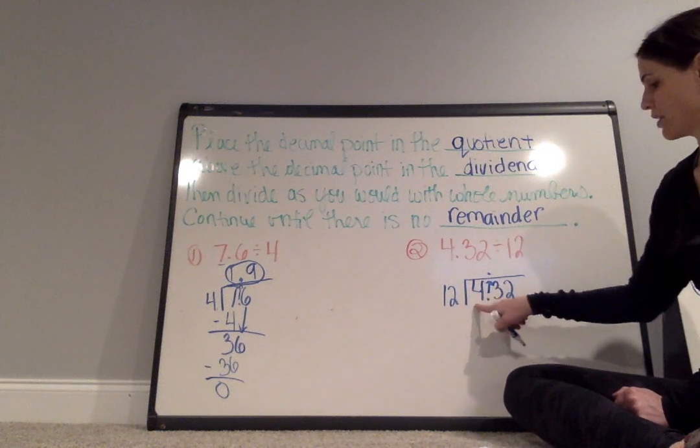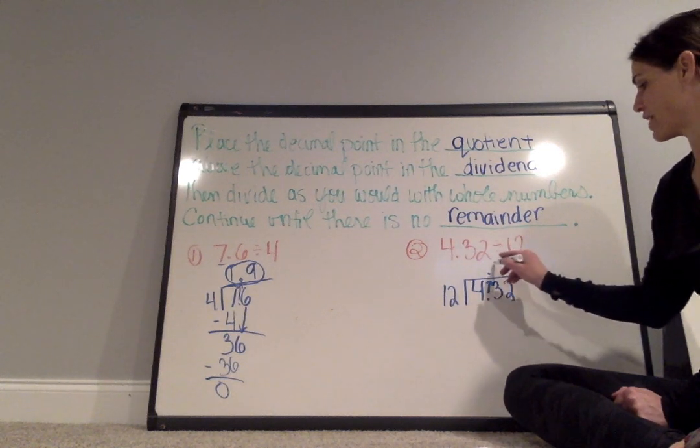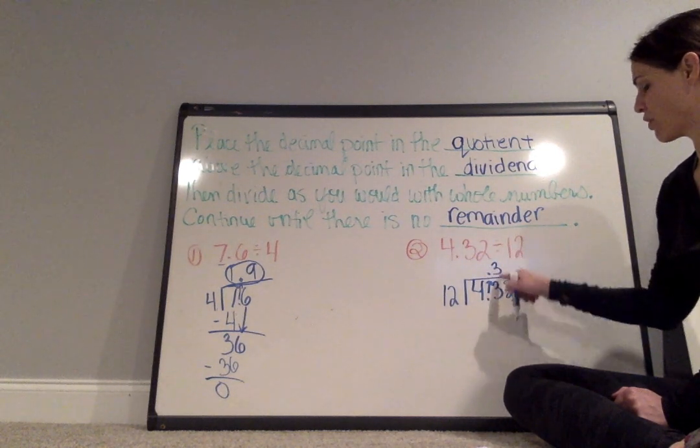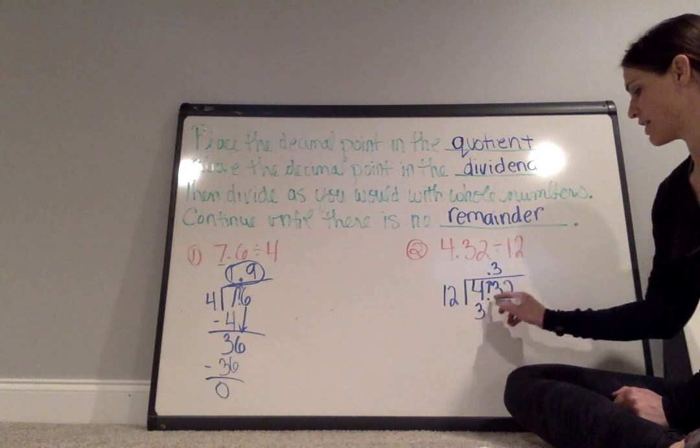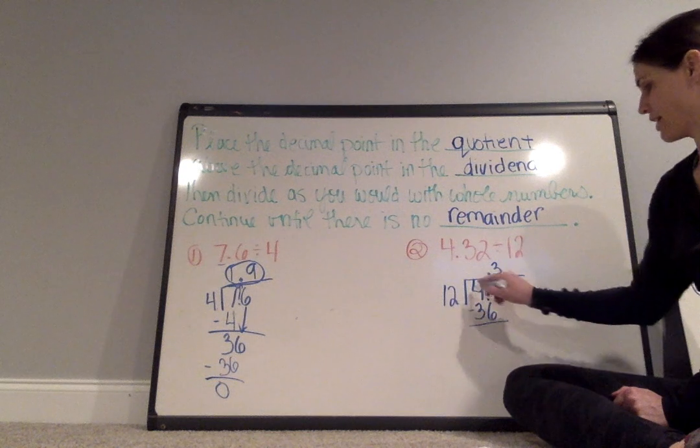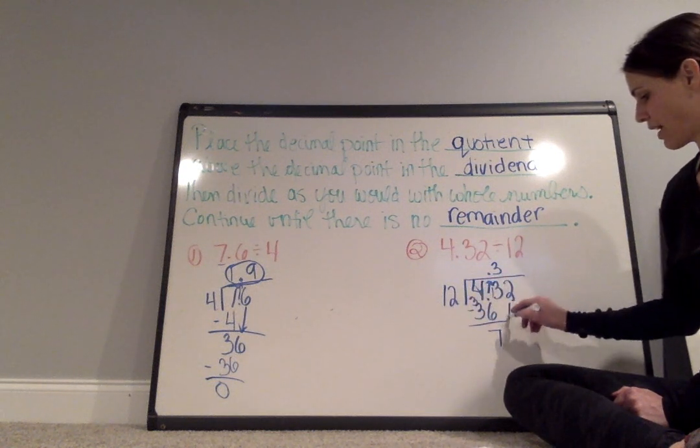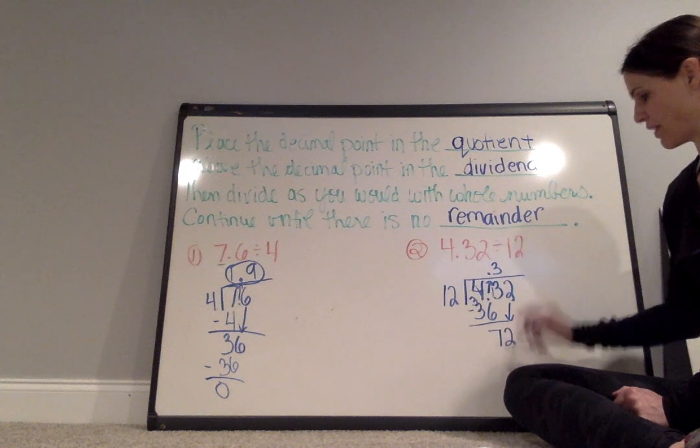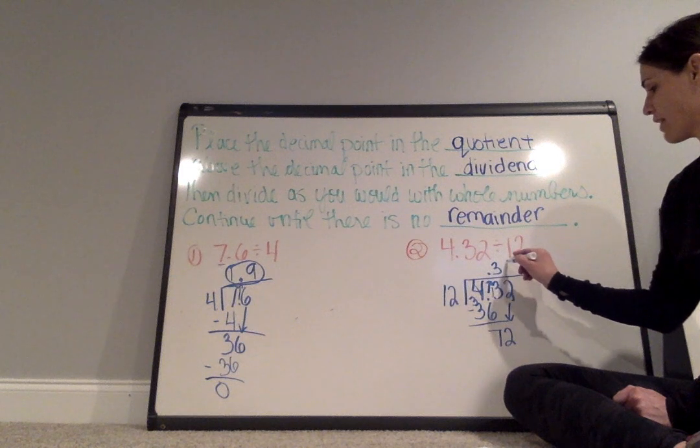12 cannot go into 4, so then I ask how many times can 12 go into 43, which is 3 times. So the 3 goes in my quotient above the 3. 3 times 12 is 36. When I subtract, I get 7. And then I bring down the next digit in the dividend, which is 2.